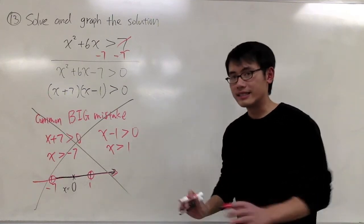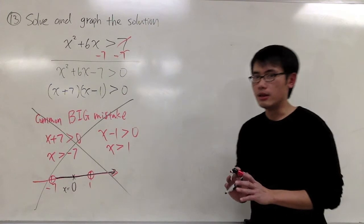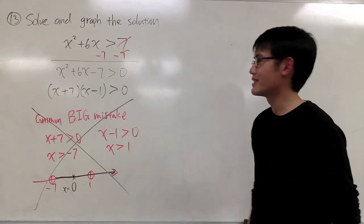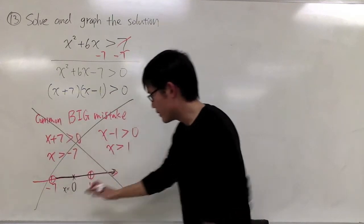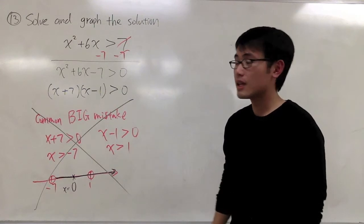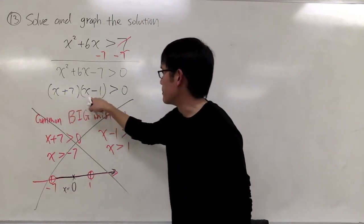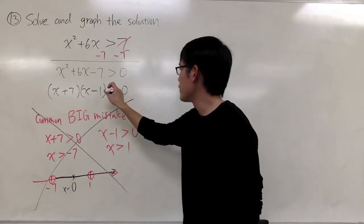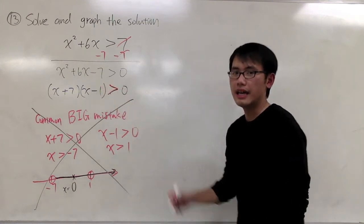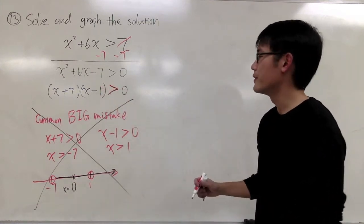I'll show you a safe way to do it. It may not be the shortest way, but this is a safe way. Don't do this on the test. This is a big mistake. So what, this times that is greater than 0. First of all, the inequality is just bothering us. We have greater than 0.